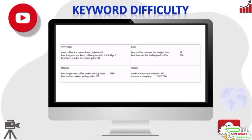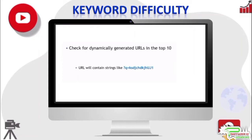Keywords with very low all-in-url results should be very easy to rank, and those with a lot of pages with the keyword in the URL should be harder to rank. If you see dynamically generated pages ranking in the top 10 — those are pages with curious strings in their URLs — that is usually a very good sign the phrase is easy to rank. URLs with curious strings ranking in the top 10 would mean that with a very well optimized page you should be able to rank for the phrase without too much difficulty.